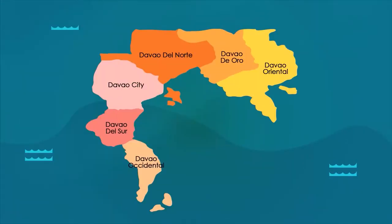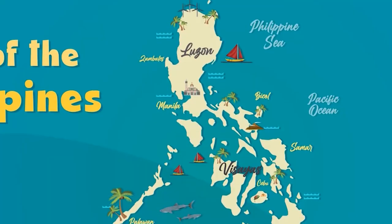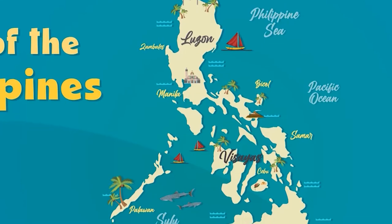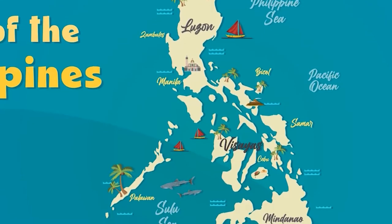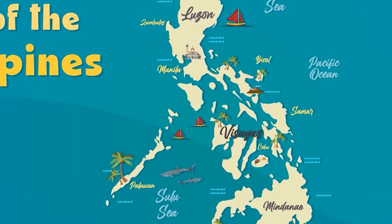Ang mapa ay isang mahalagang kagamitan upang matuntun ang mga lugar na hindi natin alam. Ito rin ang ating ginagamit upang matukoy ang mga anyong lupa at anyong tubig. Mahalaga ang mapa sa paghanap ng lalawigan, rehiyon, at iba pang lugar.